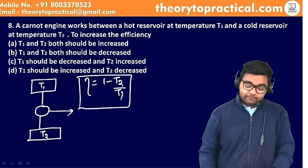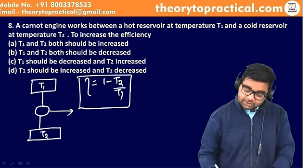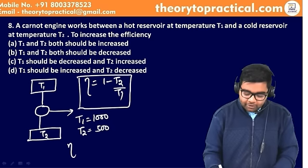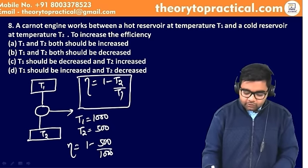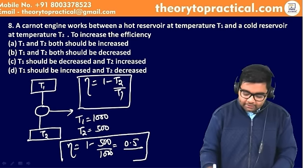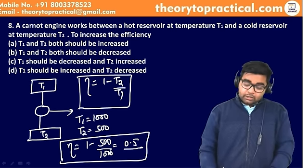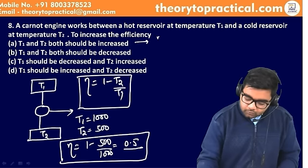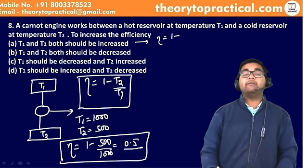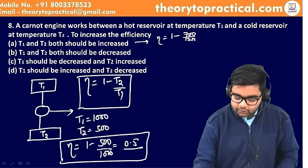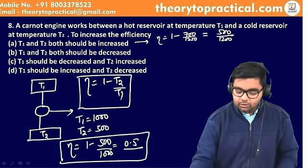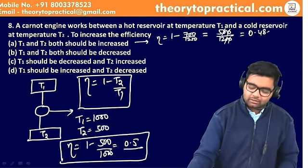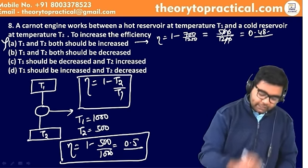एक example लेते हैं: T1 = 1000, T2 = 500। Efficiency = 1 − 500/1000 = 0.5। Option 1: T1 और T2 दोनों को बढ़ा दिया जाए — T1 = 1200, T2 = 700। Efficiency = 1 − 700/1200 = 500/1200 ≈ 0.41, जो less है। तो यह option नहीं हो सकता।